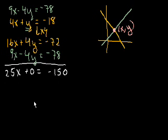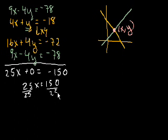So we have 25x equals minus 150. Well, we could just divide both sides by 25. Or multiply both sides by 1 over 25, it's the same thing. And you get x equals, that's a negative 150, x equals minus 6. There we solved the x-coordinate.